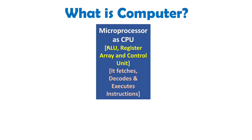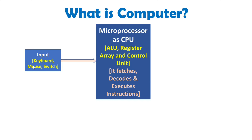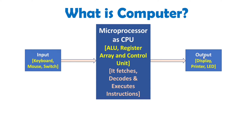Now you will observe how the microprocessor takes input. For that, there will be input peripherals like a keyboard, mouse, and switch that we interface with the microprocessor. So in your computer you will have a keyboard as well as a mouse — those are input peripherals that we interface with the microprocessor.